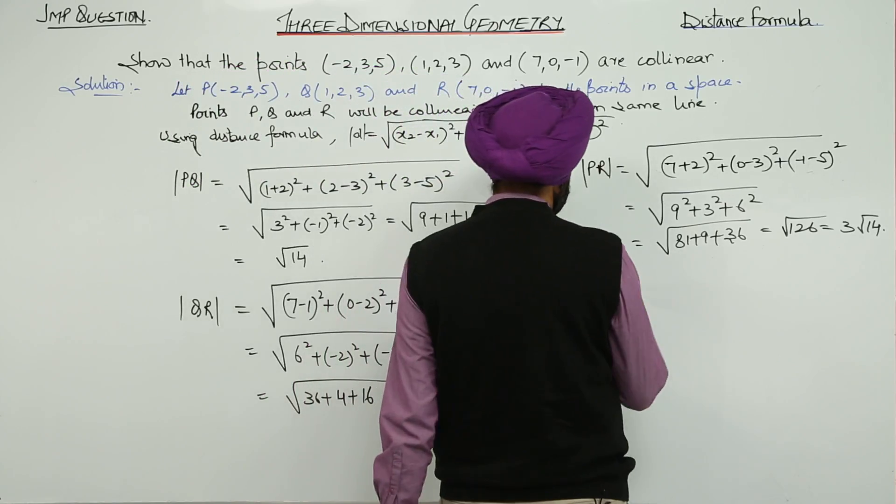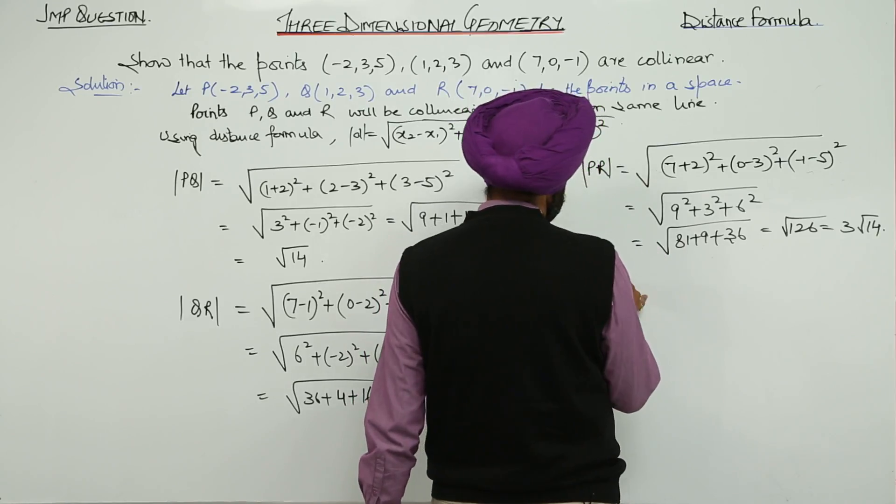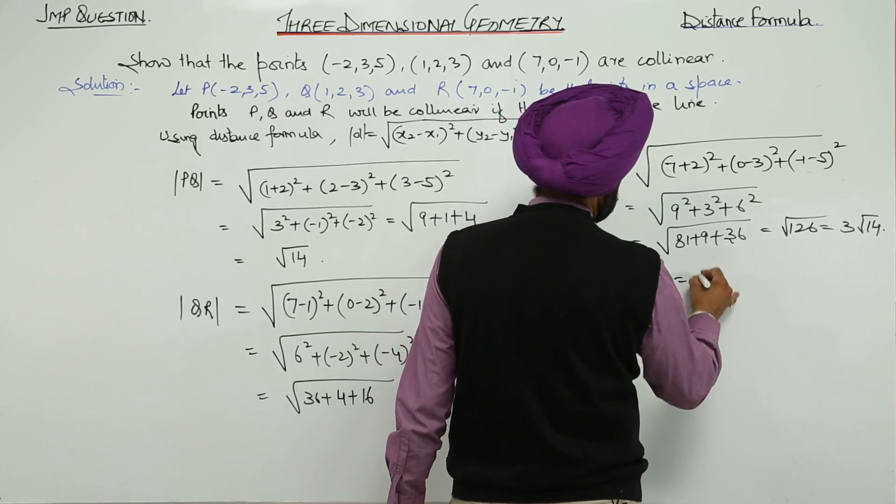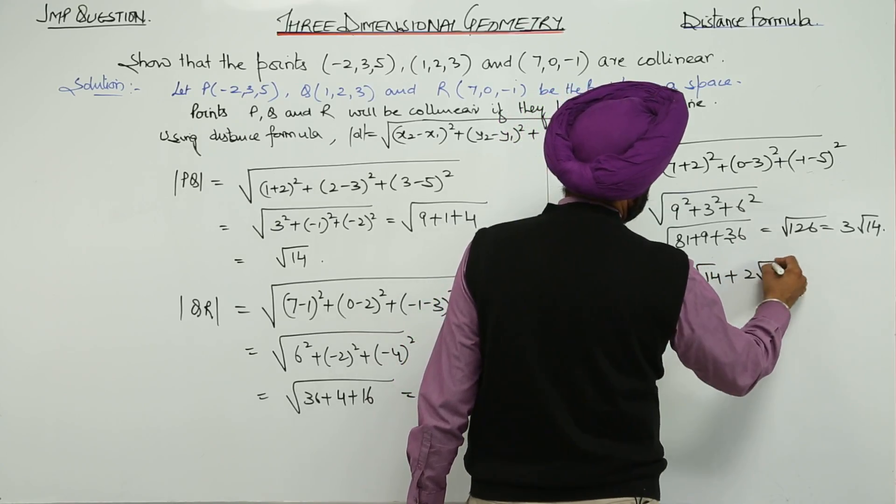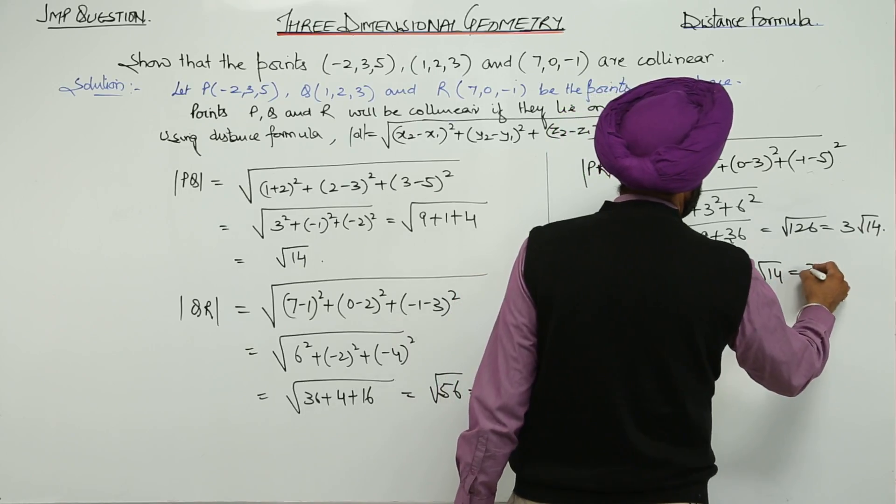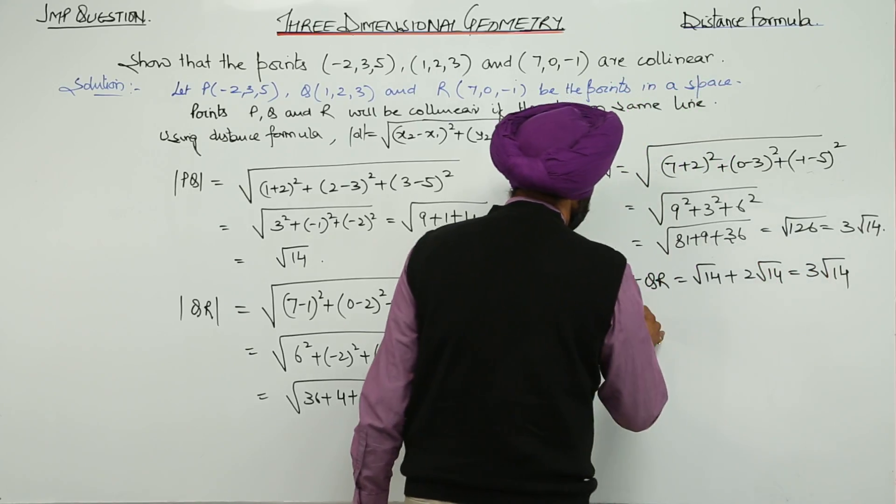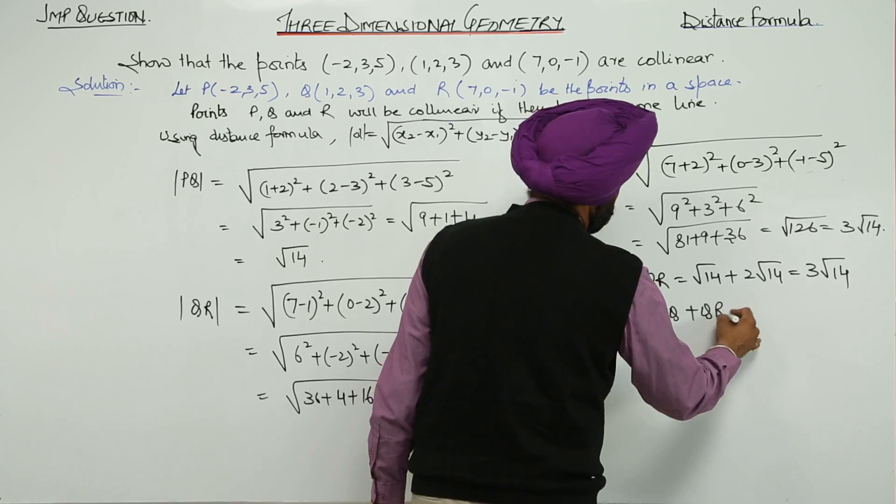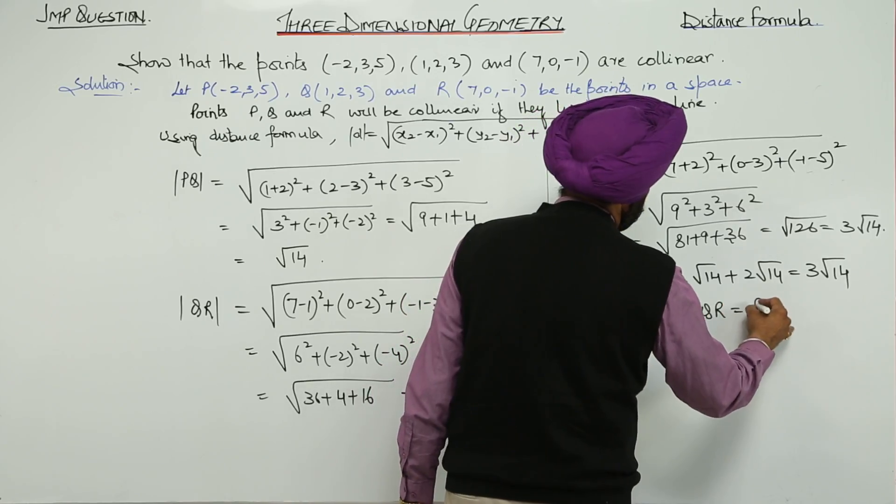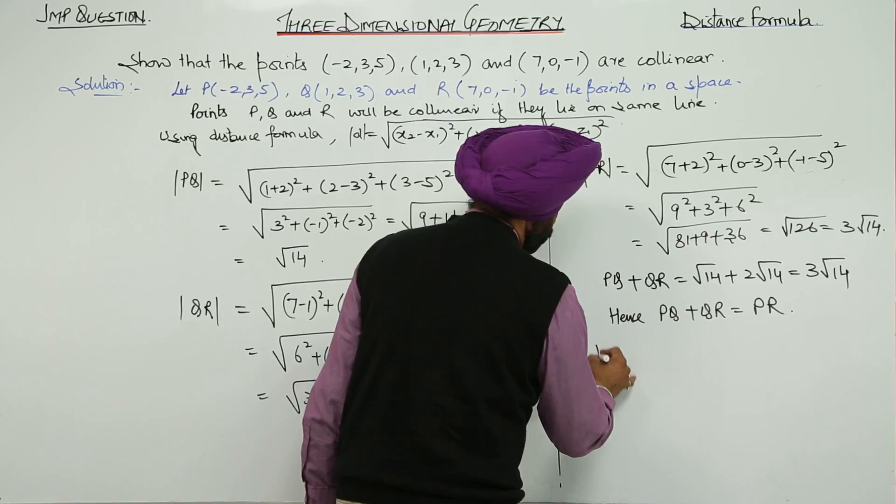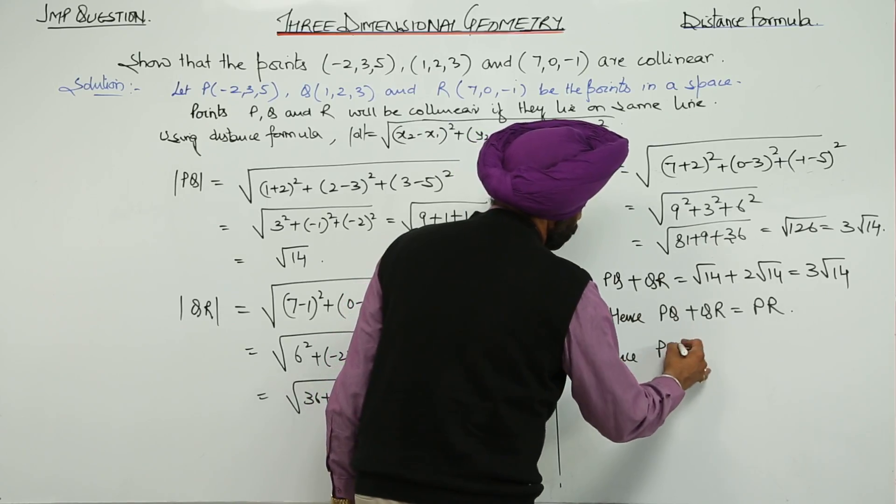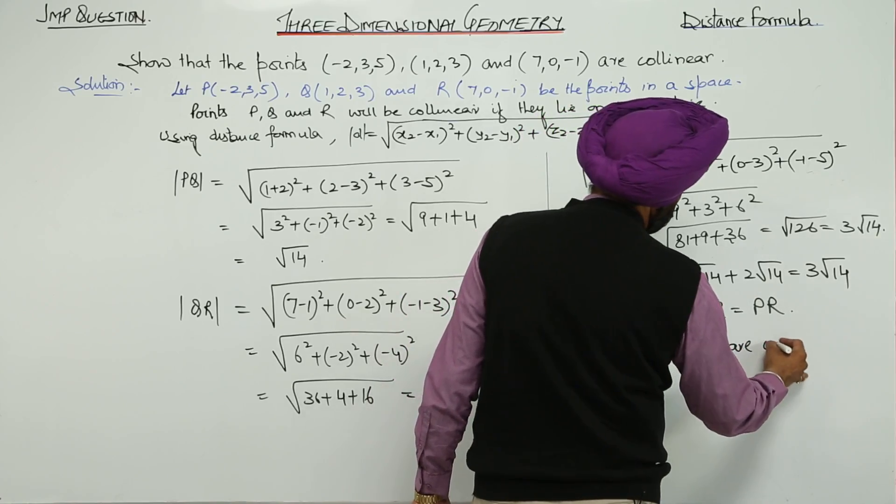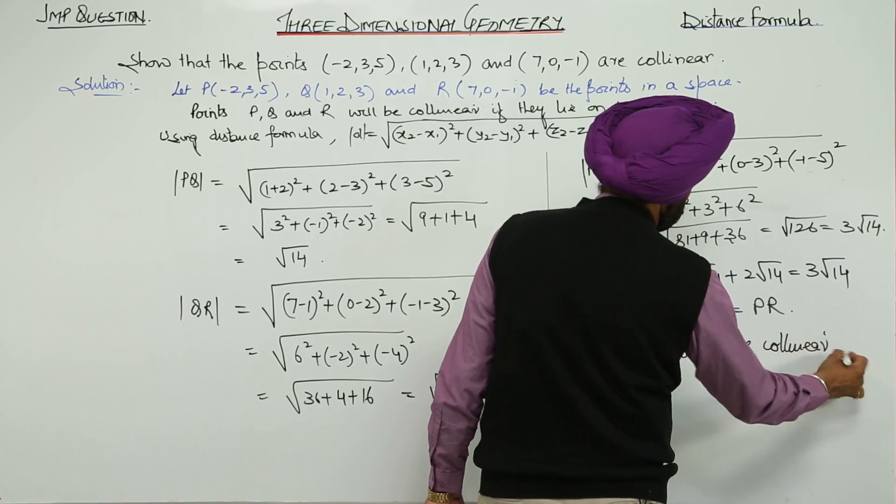PQ plus QR equals root 14 plus 2 root 14, which equals 3 root 14. PQ plus QR equals PR. Hence, P, Q, R are collinear.